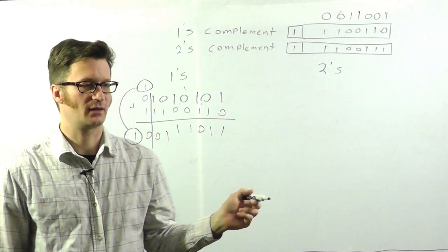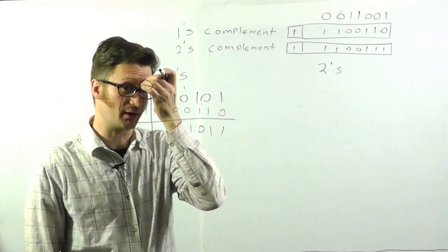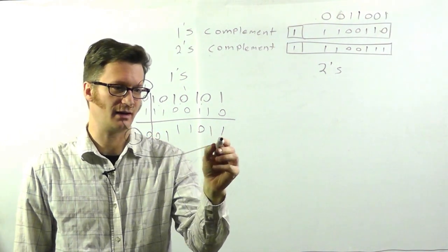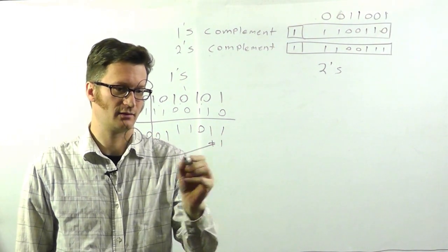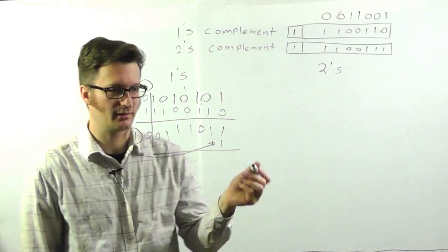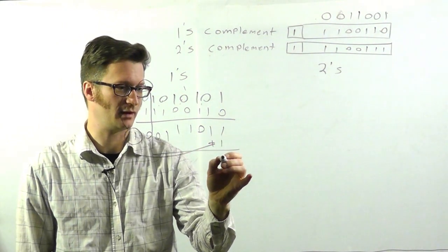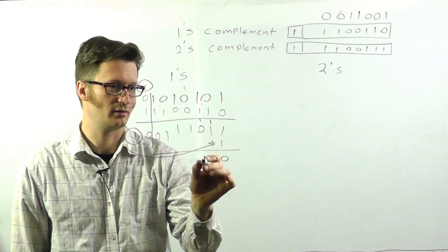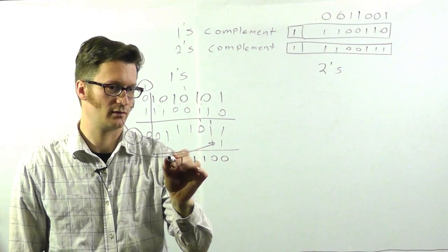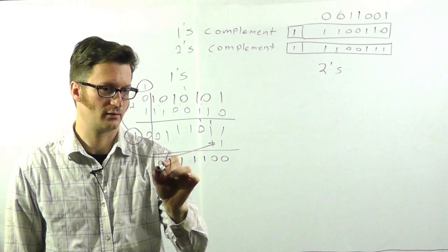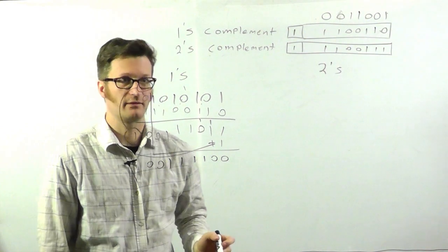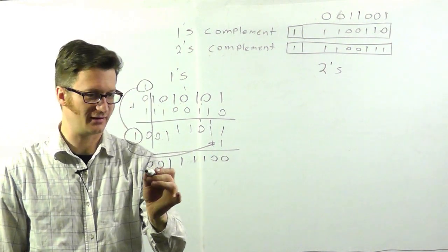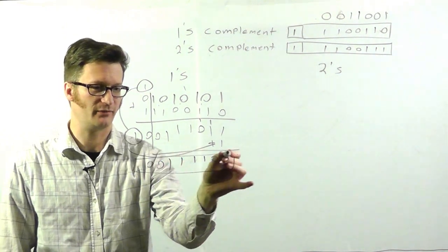With a one's complement number, when we have an overflow, we have to bring that in and add it. So, wrap around carry. So, 1 plus 1 is 2. And that is also 2. If you go back in the video, you'll see that this is the same value as we had before.